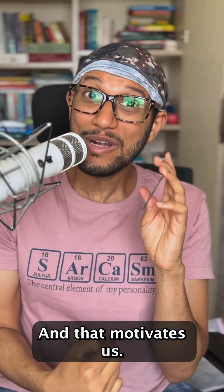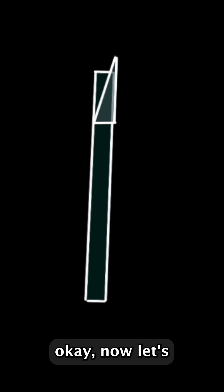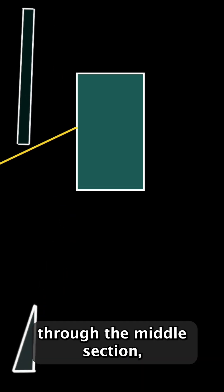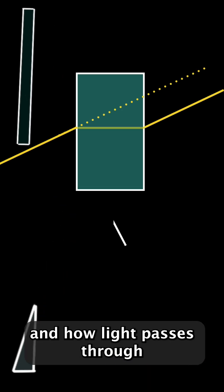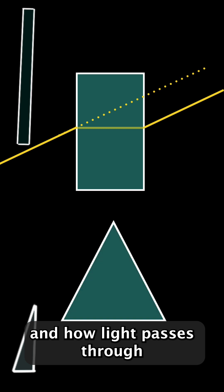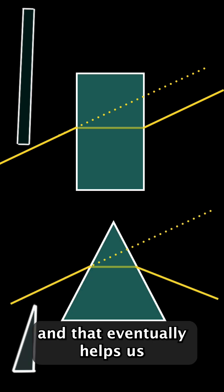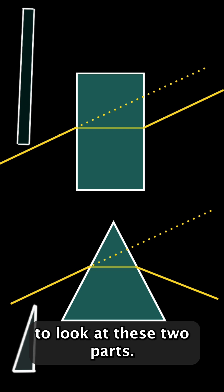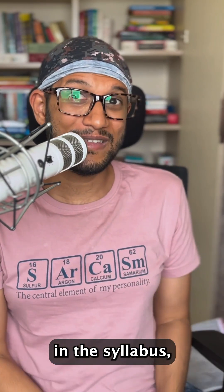And that motivates us. Now we say: let's see how light passes through the middle section — the parallel-sided glass slab — and how light passes through the prism, the top section. That eventually helps us look at these two parts — the topic that is actually there in their syllabus.